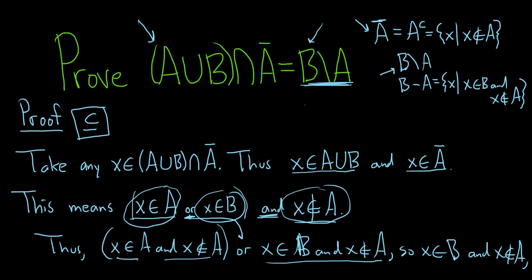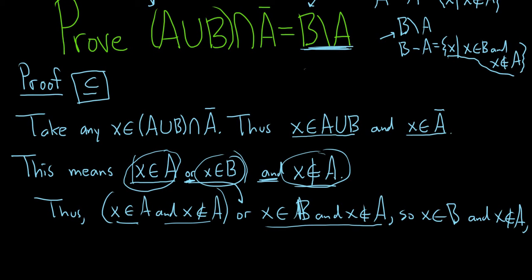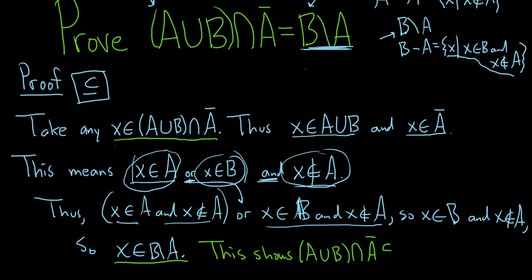So what does that mean? That means that x is in the relative complement. So it's in B set minus A. So x is in B\A. So we took an element in this set and we showed that it was in this set. So this shows that (A∪B)∩Ā is contained in B\A.